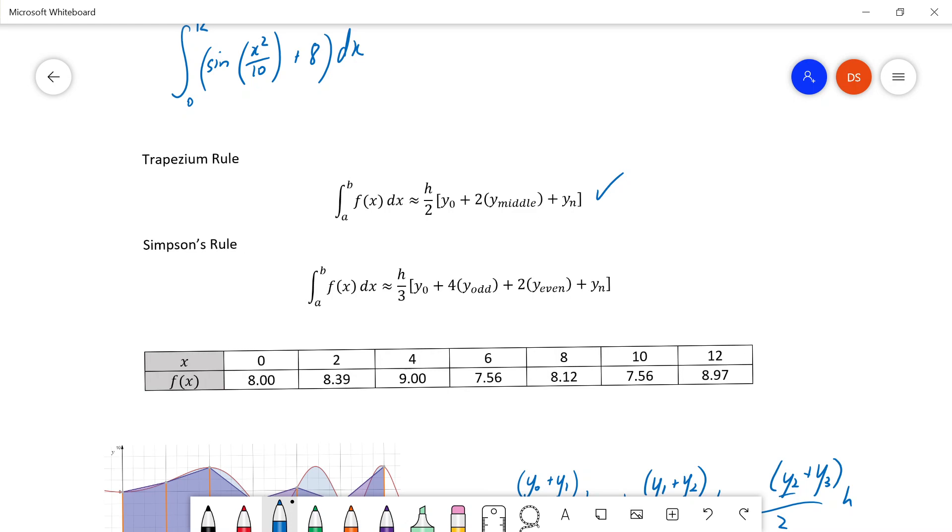Simpson's rule has a very similar way of doing this, but instead of doing 2 times the middle, it does 4 times the odd ones and 2 times the even ones. What do I mean odd and even? Well, what I do is I grab n and I go starting from 0, I count up. This tells me how many strips. I've got 6 strips. Even though there's 7 numbers, I've only got 6 strips. And so for the trapezium rule, I'll take this number and then 2 times all these numbers and then I'll add this number.